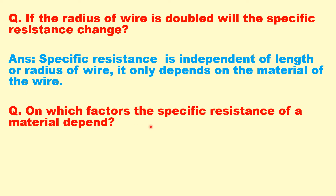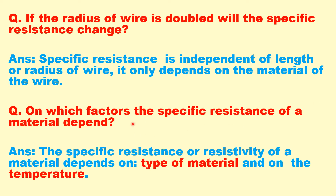On which factors does the specific resistance of a material depend? Specific resistance or resistivity of a material depends on the type of material and on the temperature.